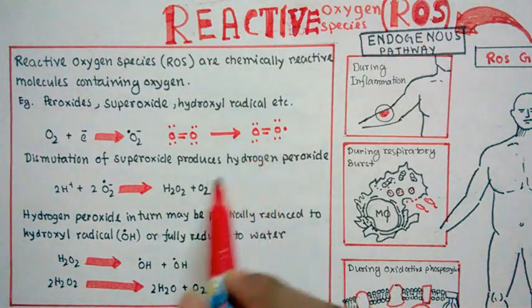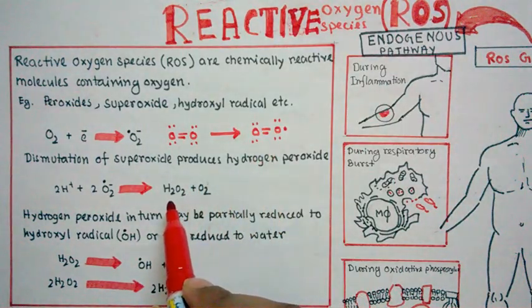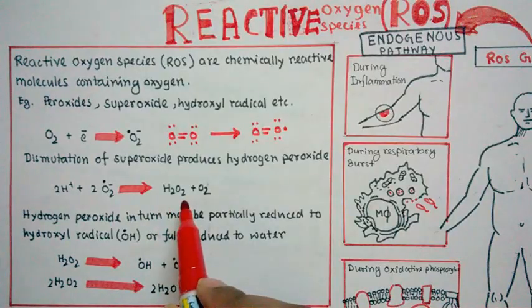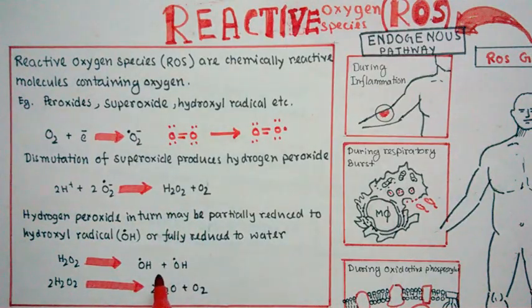Other such reactive oxygen species are hydrogen peroxide. Hydrogen peroxide is not as dangerous as superoxide radical, but still it has a lot of harmful effects. Apart from hydrogen peroxide, another super duper dangerous reactive oxygen species is hydroxyl radical.